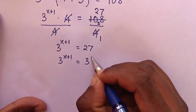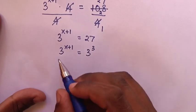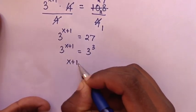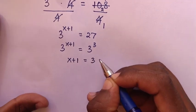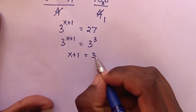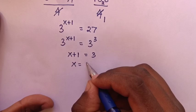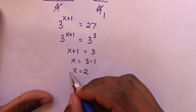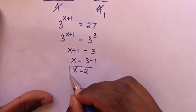So here we have same base but different powers. So we compare the power x plus 1 is equal to 3. Then we take 1 to the right side, so x is equal to 3 minus 1. Therefore x is equal to 2. So this is our final answer.